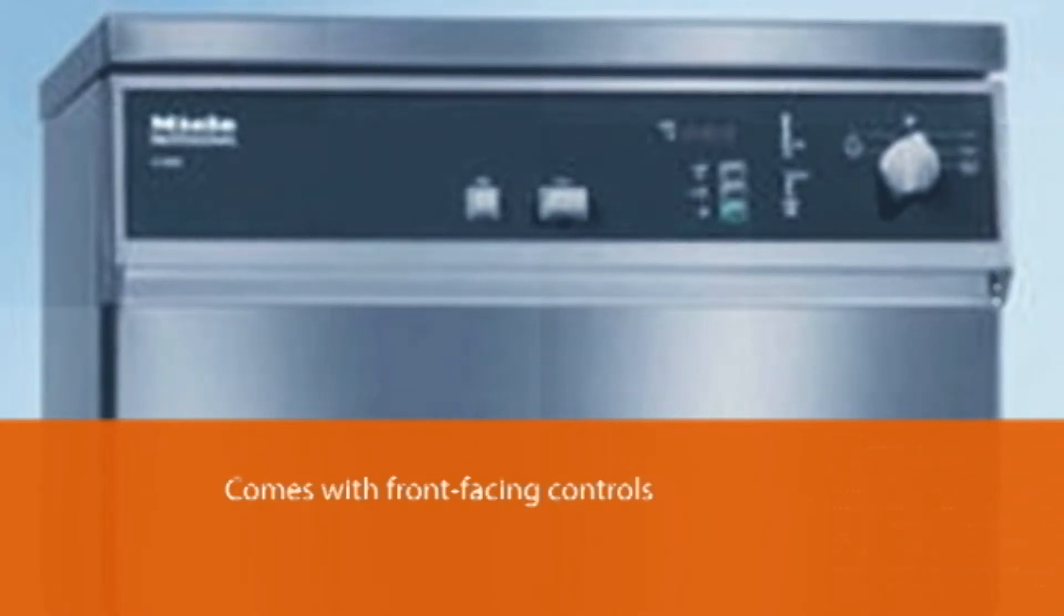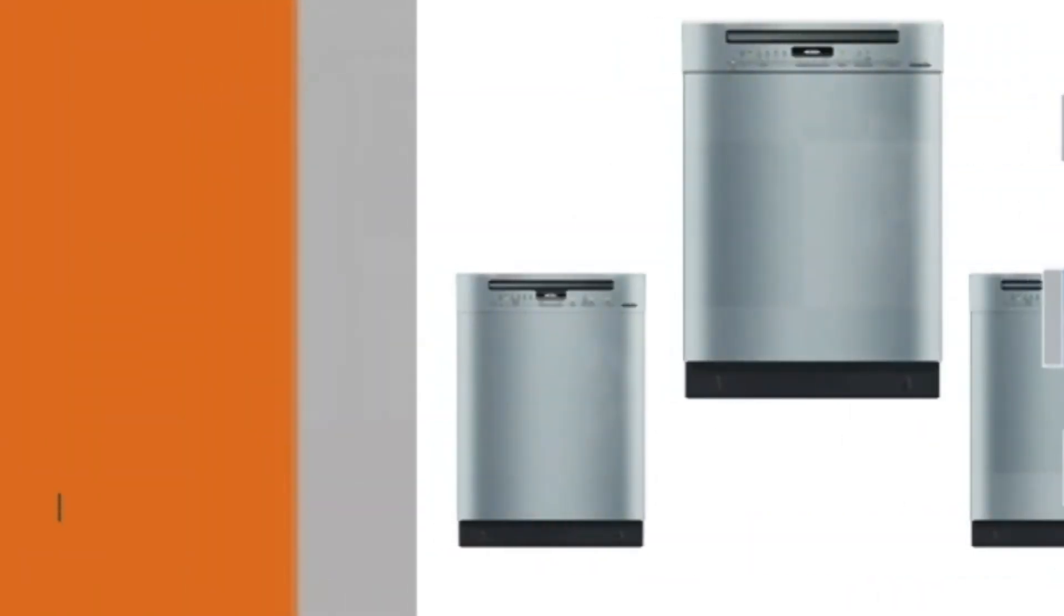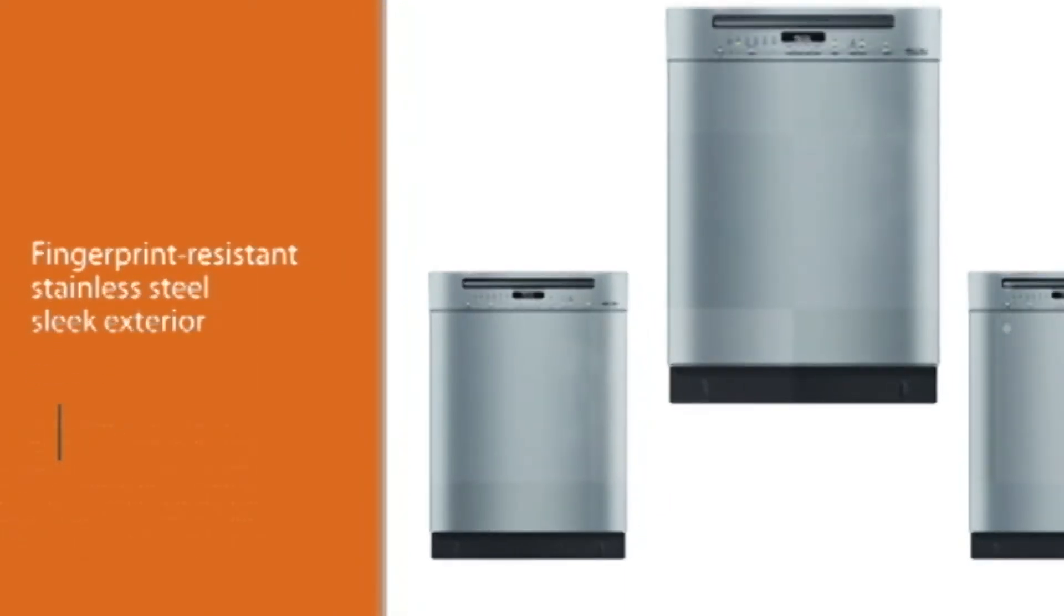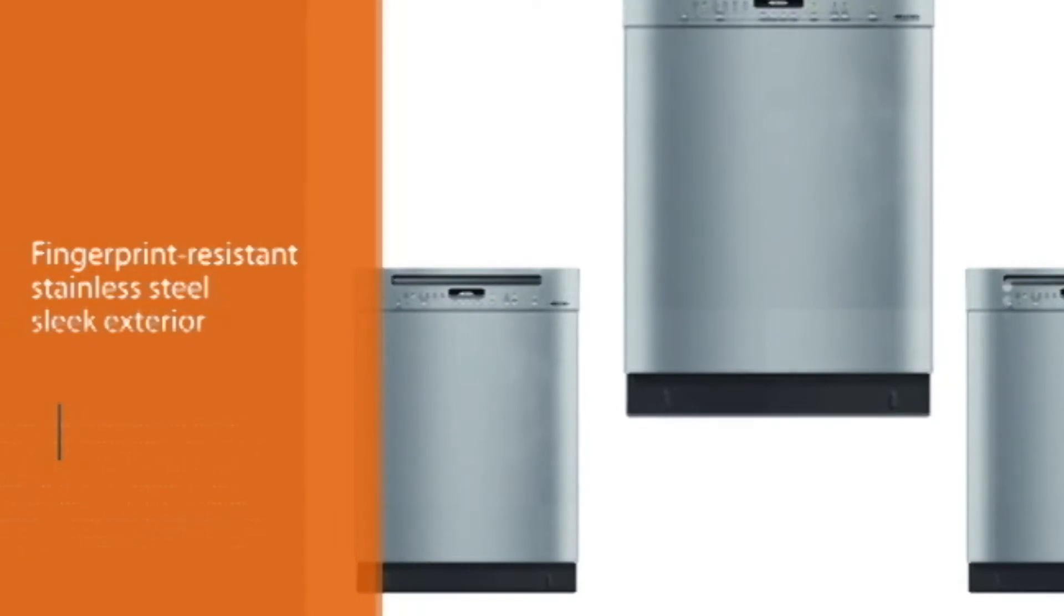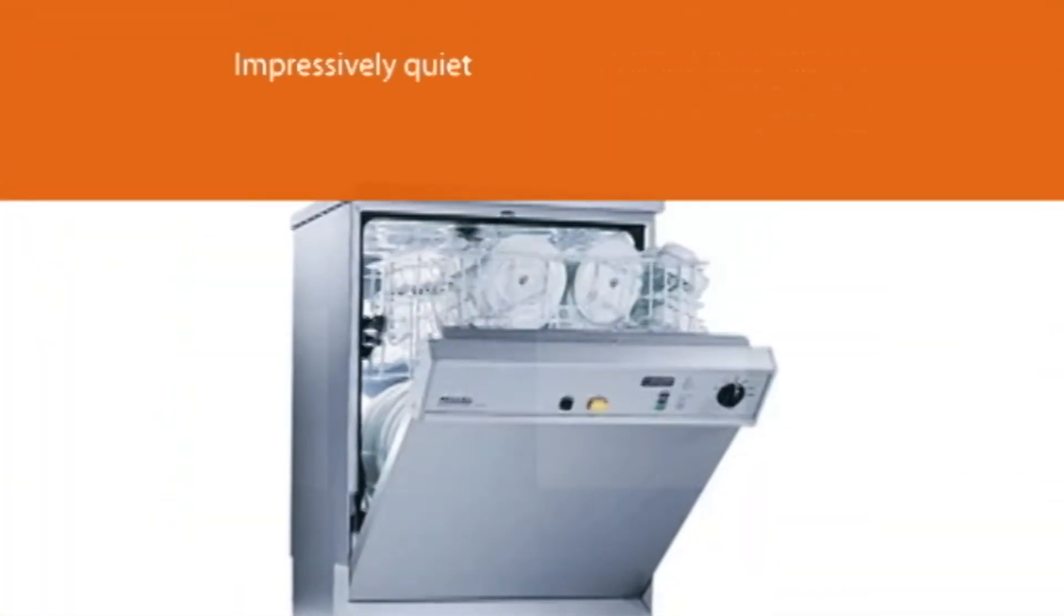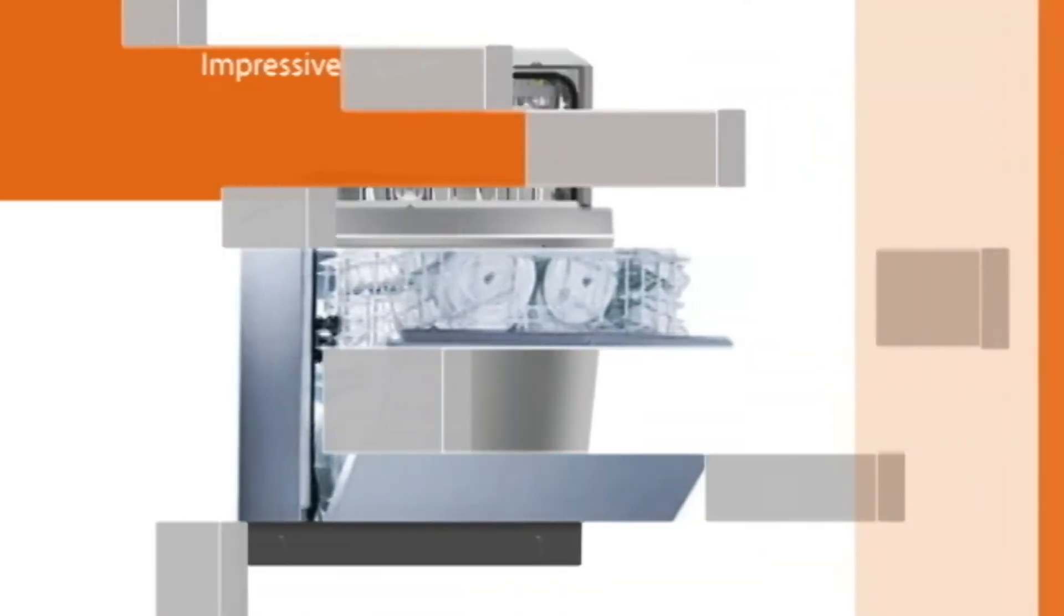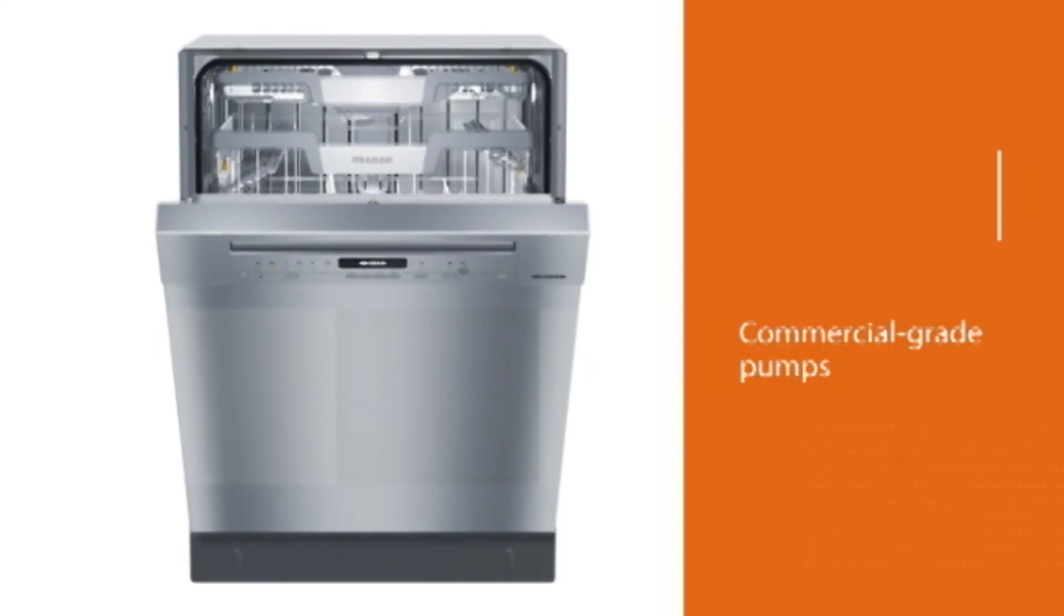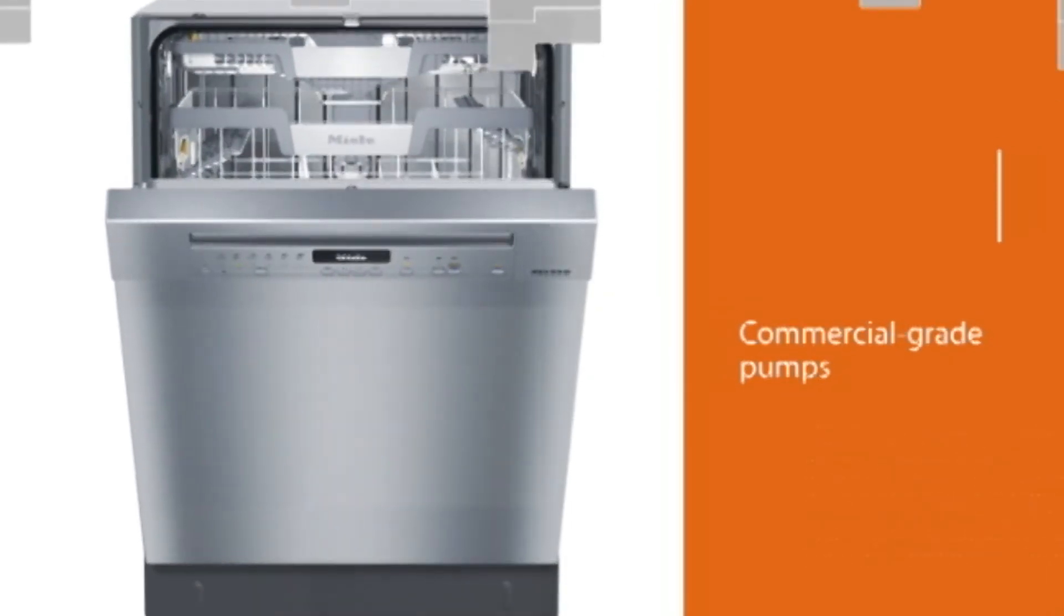This model comes with either front-facing controls or hidden controls with a towel bar handle. Fingerprint-resistant stainless steel is used everywhere, from the sleek exterior to the sturdy interior tub. While the noise level of 43 decibels isn't the best in its class, it's still impressively quiet. You can expect to get spotless results every time. Miele uses professional, commercial-grade pumps to guarantee excellent results, every cycle.